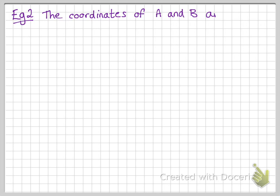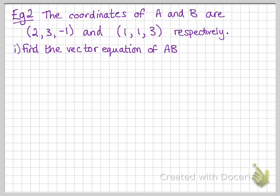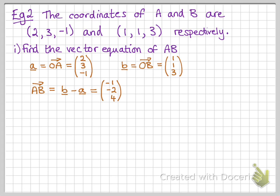Okay, second example. We have the coordinates of A and B are as follows. We want to find the vector equation of AB, so the equation through those two coordinates. So, first of all, we can think about what the vector a would look like. So, the position vector of A would be 2, 3, minus 1. The position vector of B would be 1, 1, 3. And so, AB would be minus 1, minus 2, 4.